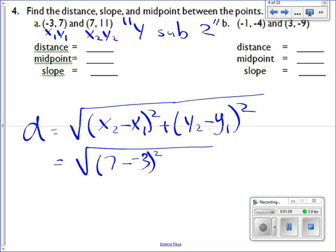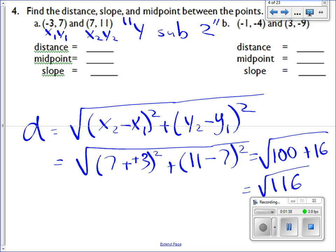We're gonna change those to a positive. Plus 11 minus 7. So you're gonna simplify that, so it's going to be 7 plus 3 squared is 100, and then 11 minus 7 is going to be 4. So 4 squared is going to be 16. So that's equal to the square root of 116.